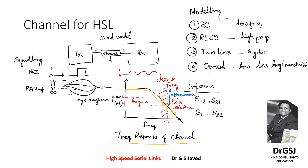It is very important to identify what is the architecture of your system. Understanding how the channel behaves will define how you architect your system. Your aim is to reduce the impact of attenuation.